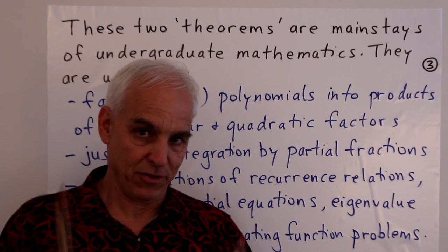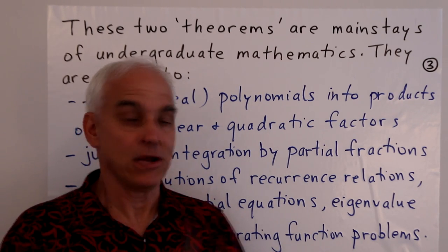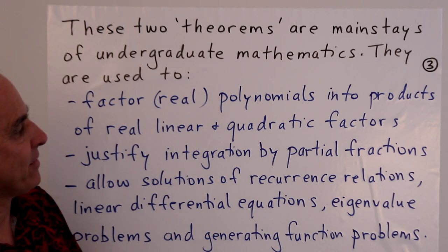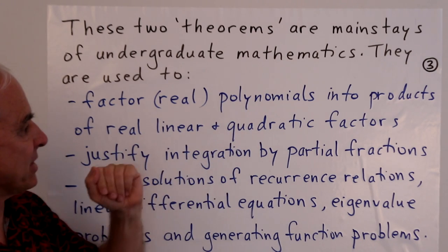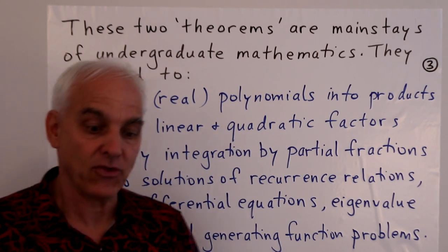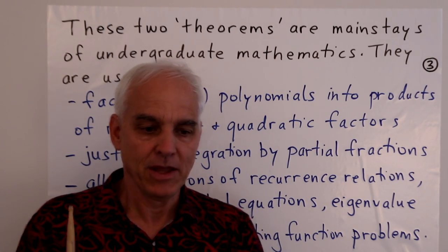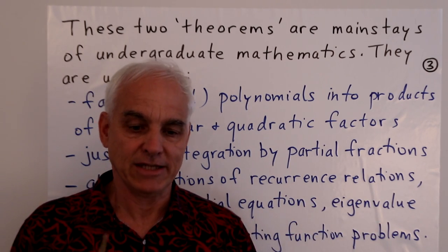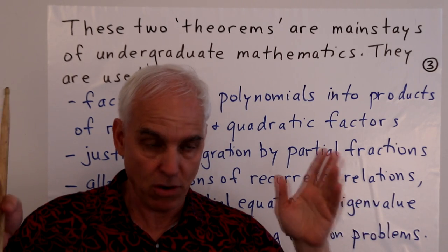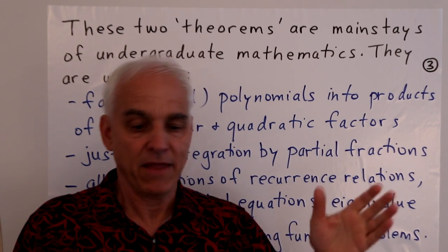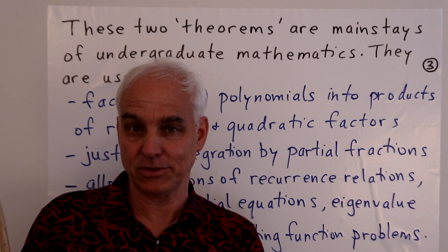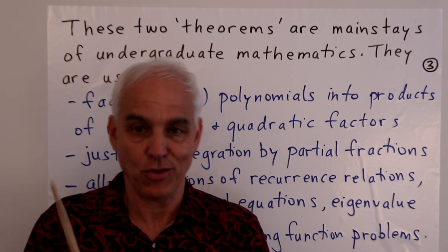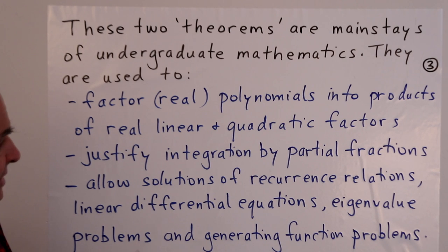Some of the ways that the fundamental theorem of algebra ends up being used in undergraduate mathematics is through the consequence that if you have a real polynomial, then you can deduce that it factors into a product of linear and quadratic factors, all of whose coefficients are real numbers. Even if you're a little bit unhappy about or unfamiliar with complex number arithmetic, a consequence of this is that if you have an arbitrary polynomial with so-called real coefficients, or maybe rational coefficients, then you can write it as a product of linear and quadratic factors, all with real or possibly rational coefficients.